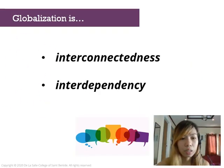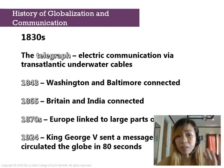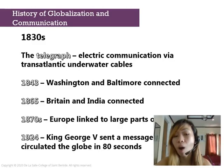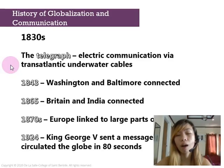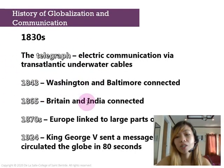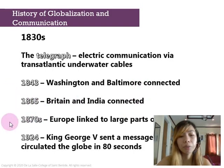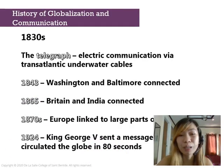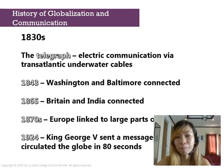Let us proceed to a brief history of globalization and communication. In the 1830s, there was the telegraph — an electric communication via transatlantic underwater cables. The telegraph was the very first major technological advancement. By 1840, Washington and Baltimore were connected. In 1865, Britain and India were connected. In the 1870s, Europe was linked to larger parts of the world. And in 1924, King George V sent a message that circulated the globe in 80 seconds.